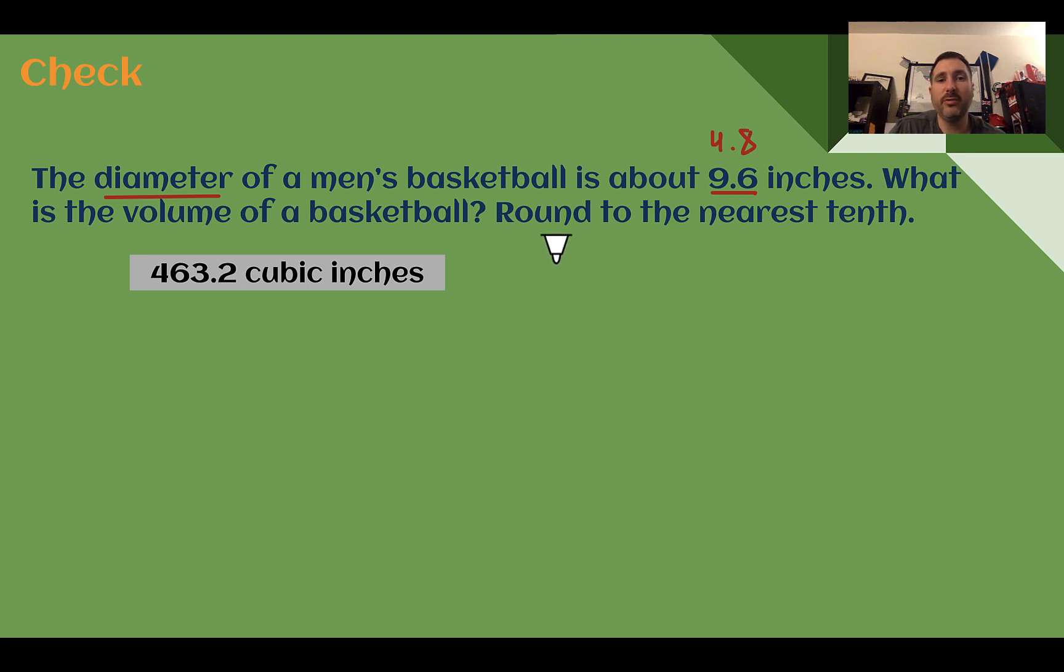Using a calculator, we can plug it in. So 4 thirds pi times 4.8 to the third power. We can use our calculator and we should get 463.2. When you're using the calculator, I would do this part first, then multiply by 4, then divide by 3. So find 4.8 to the third power times 4 divided by 3. Once you get a value there, then just hit times pi on your calculator. And then round to the nearest tenth.